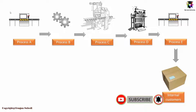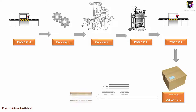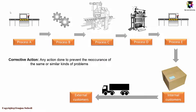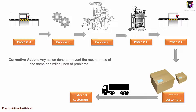Suppose the customers found a defect with your product or service, or the quality assurance finds the defects — the customers could also be external. Any action followed after the defect or complaint is registered is called corrective actions. You can define it as any action done to prevent the reoccurrence of the same or similar kinds of problem.